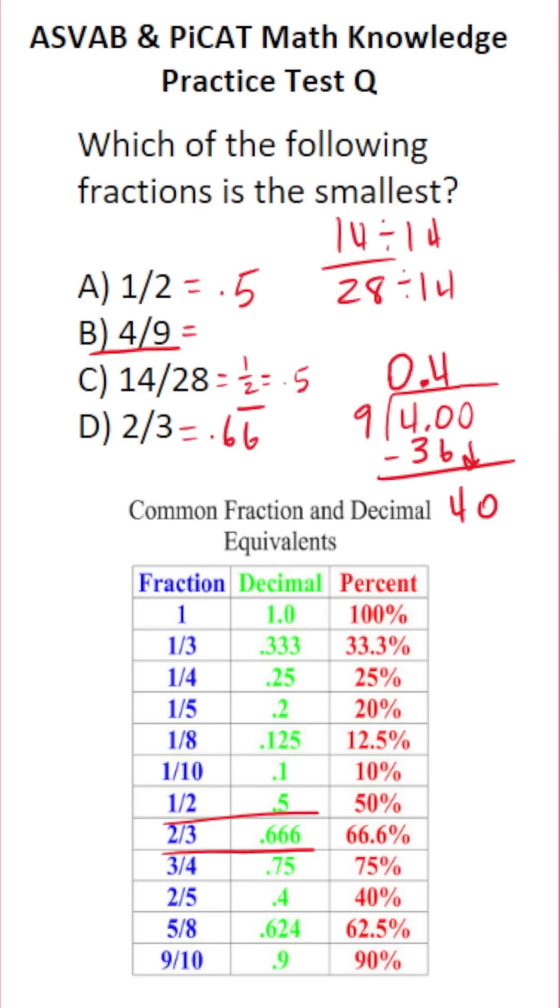Again, as we just mentioned, 9 goes into 40 4 times without going over. 9 times 4 is 36. 40 minus 36 is 4. So you can see that this is going to be 0.444 repeated.